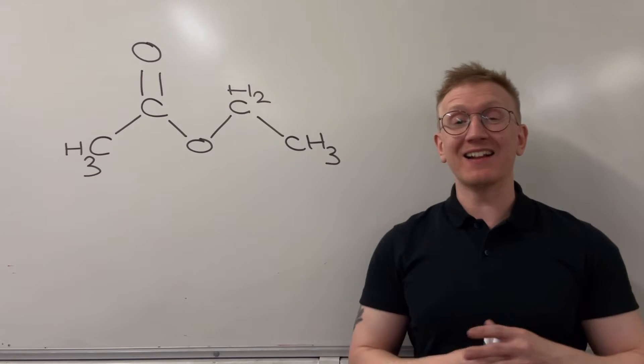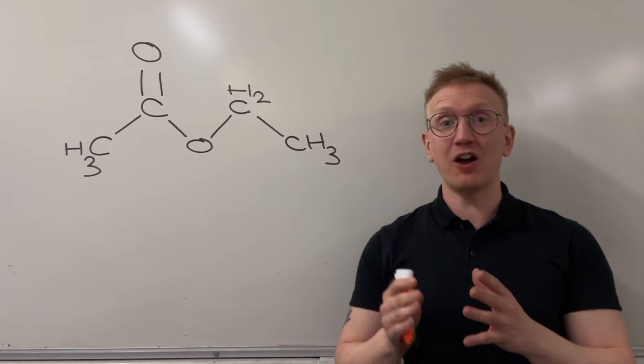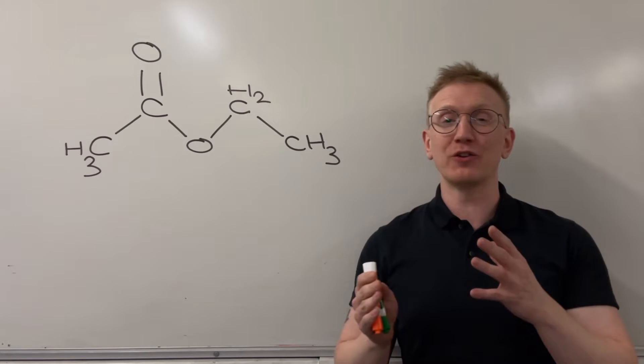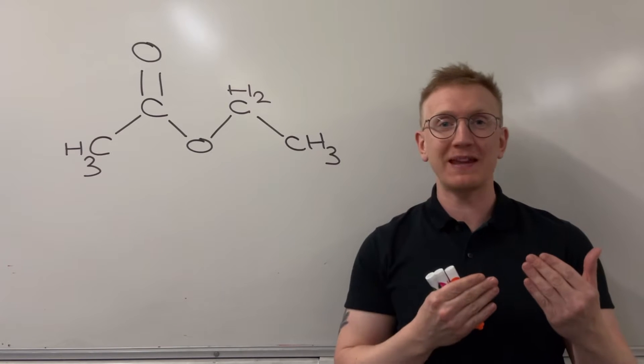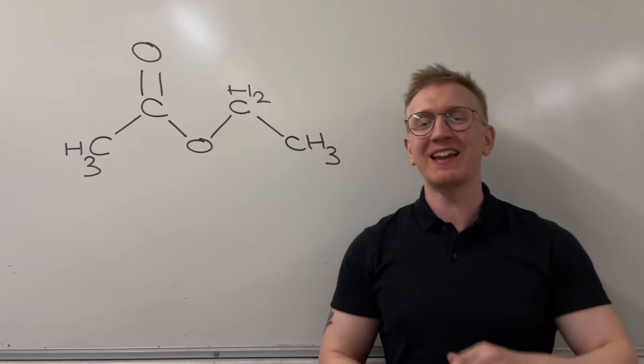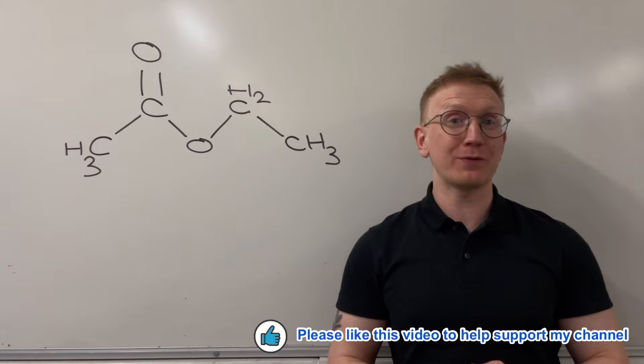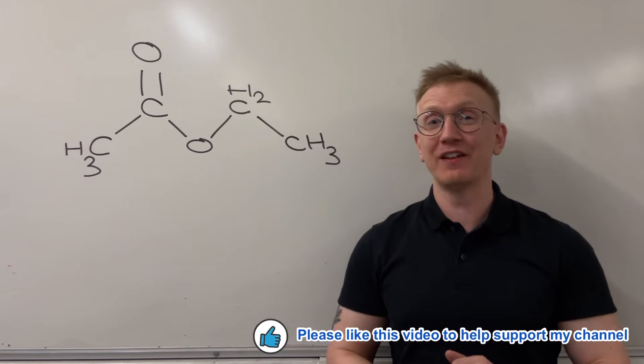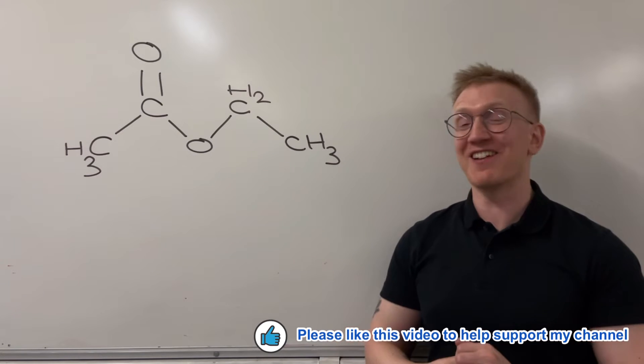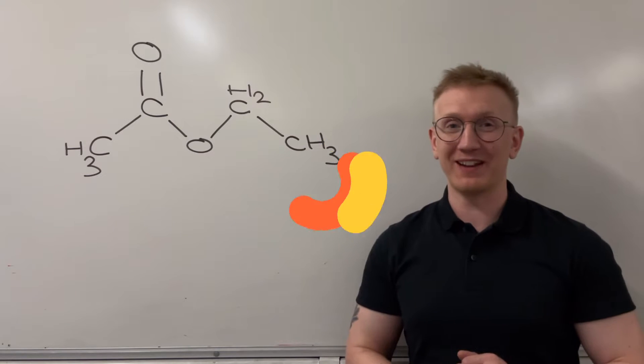So we're going to be looking here at how many peaks I expect to see on the hydrogen NMR spectrum, I'm going to be looking at what the ratio is like between those peaks, and then finally we'll be looking at that all-important splitting pattern and deciphering how many sub-peaks we expect the individual peaks that we have to be split into. So let's get started and take a look through this molecule of ethyl ethanoate.